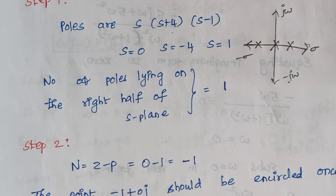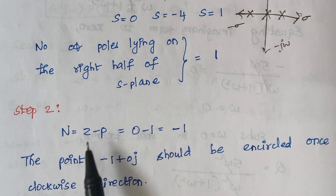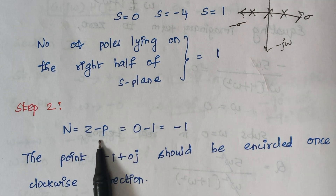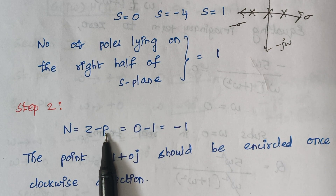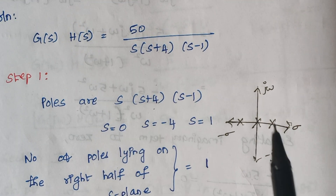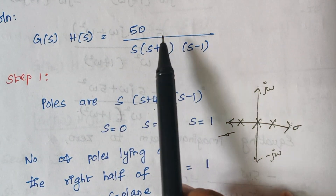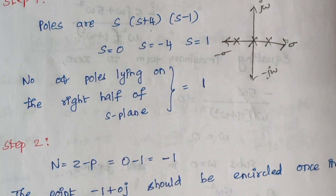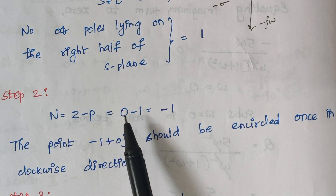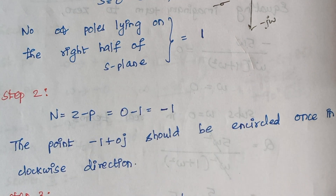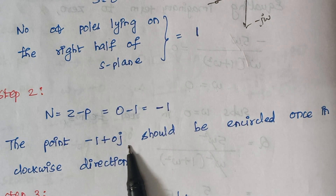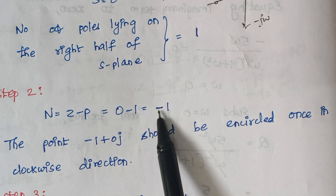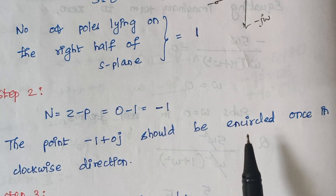The next step is finding the number of encirclements. The formula is given by N = Z − P, where Z is the number of zeros lying on the right hand side of the s-plane. In the given problem there are no zeros — no s-plus term in the numerator — so Z = 0. Therefore N = 0 − 1 = −1. This means the point −1 + j0 should be encircled once in the clockwise direction. The negative sign indicates clockwise direction and the number indicates the number of encirclements.